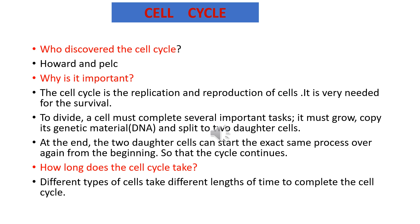To divide, a cell must complete several important tasks: it must grow, copy its genetic material — that is, DNA — and split into two daughter cells. These two daughter cells then start the exact same process from the beginning, so the cell cycle continues as a repeating series of events.